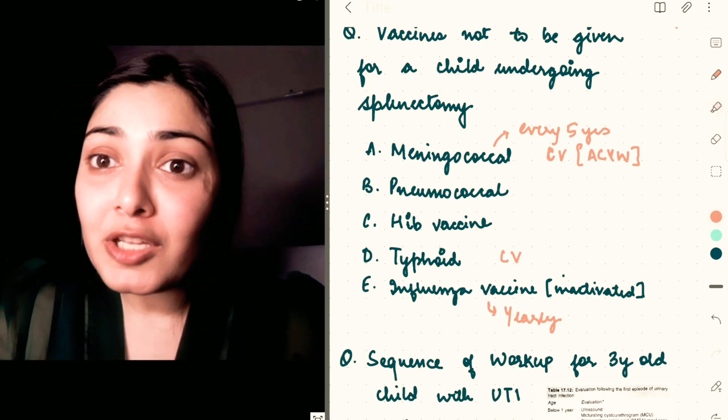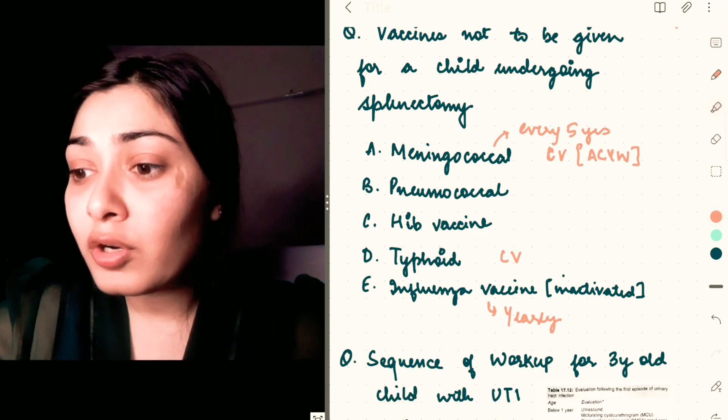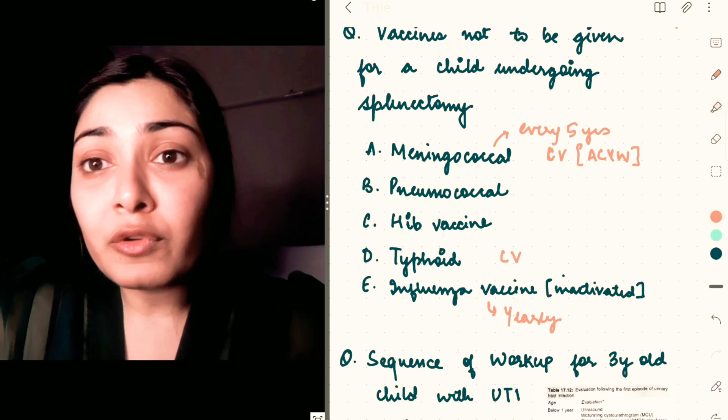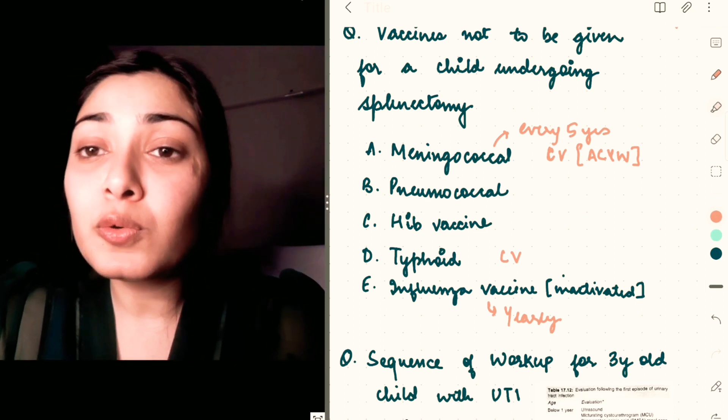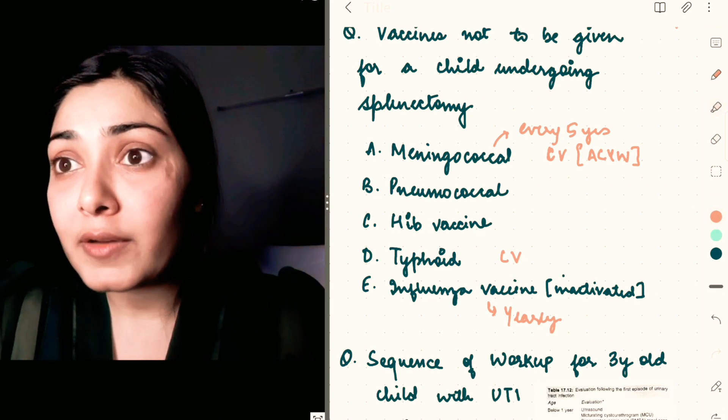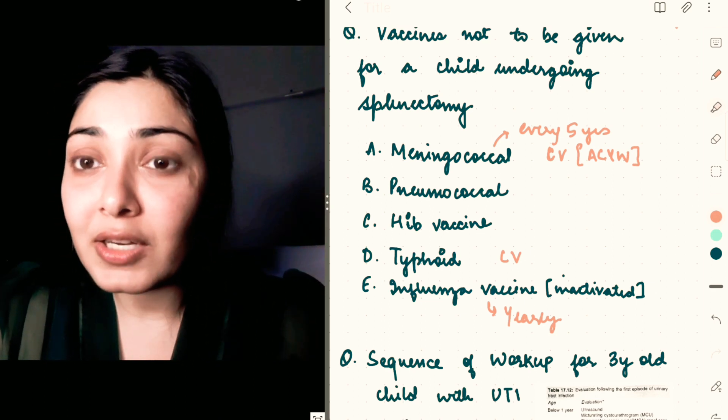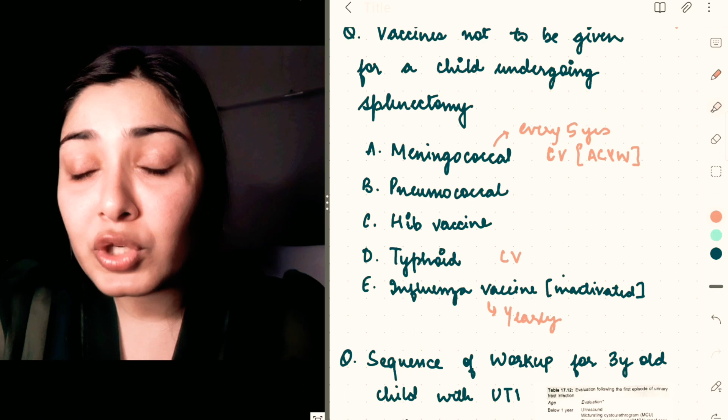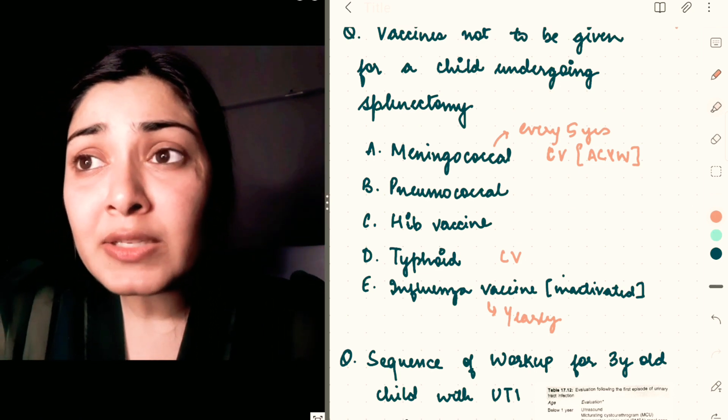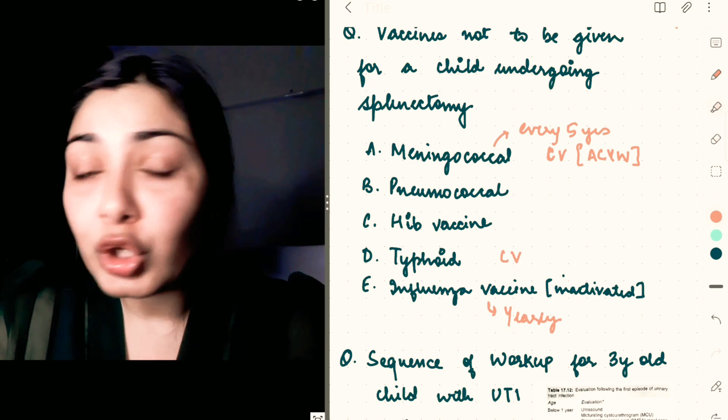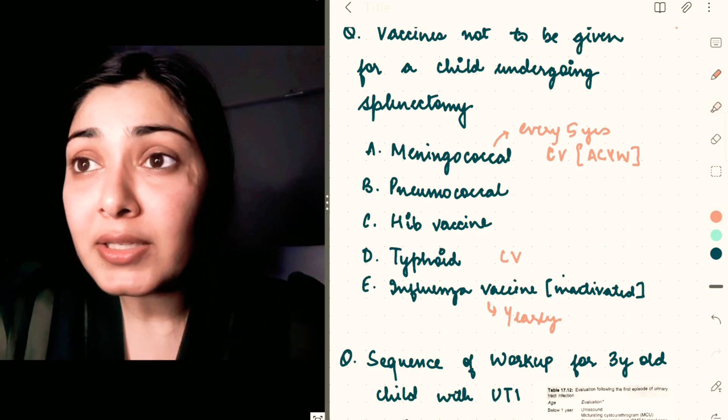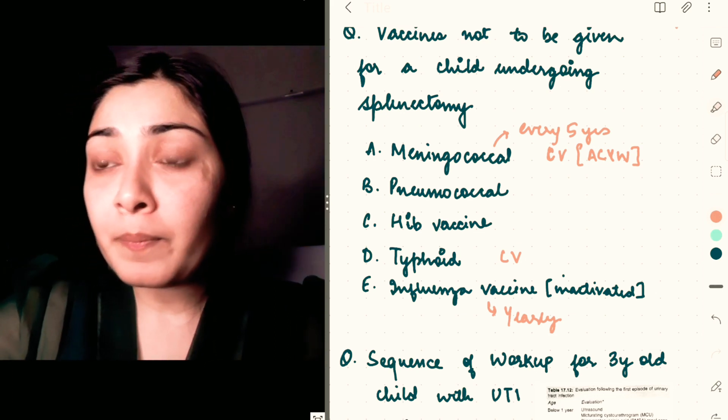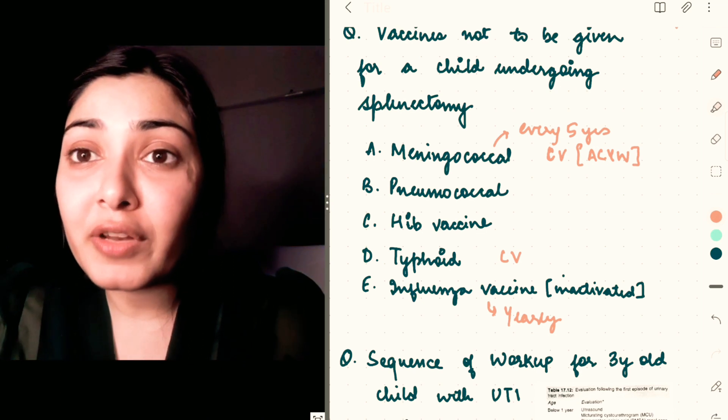The concept behind this is that the spleen is a major defense against capsulated bacteria and organisms. So removal of spleen predisposes individuals to capsulated infections through capsulated organisms. That's why we need to vaccinate them, preferably two weeks before the splenectomy is planned if it's an elective procedure. If it was an emergency procedure like during trauma or something else, then at the time of discharge or two weeks after that procedure we give this vaccination. It's more of a surgery question.